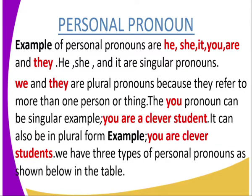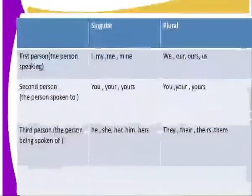Examples of personal pronouns include: he, she, it, I, we, you, and they. She, he, and it are in their singular form, whereas we and they are in their plural form because they refer to more than one person or thing. The pronoun 'you' occurs both in its singular and plural form — for example, 'you are a clever student' in singular, and 'you are clever students' in plural. We have three types of personal pronouns as shown in the table.